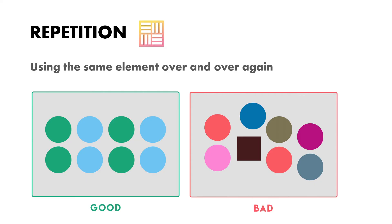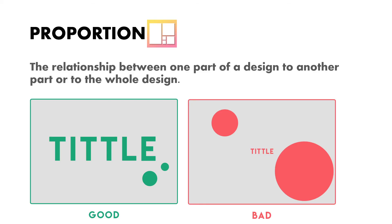Next is repetition. Repetition is using the same elements over and over again — simply using the same element multiple times. In a good example, the same green circle and the same sky-blue circle are each used multiple times. In a bad example, only one element is repeated while all the rest are distinct. In repetition examples, the same element is repeated multiple times but with changes in size and orientation — when size and orientation are the same, it becomes pattern.